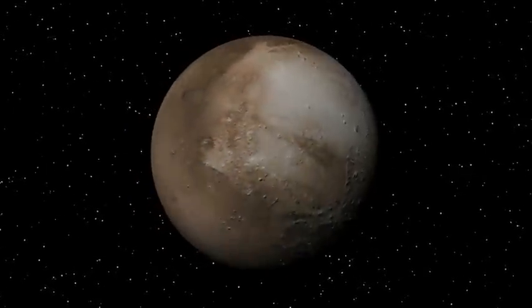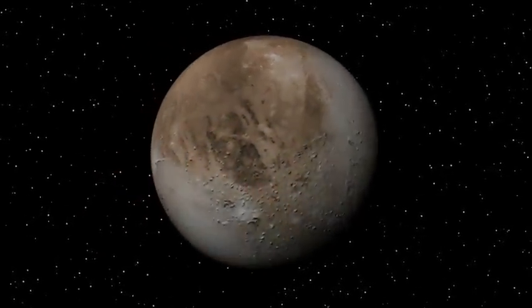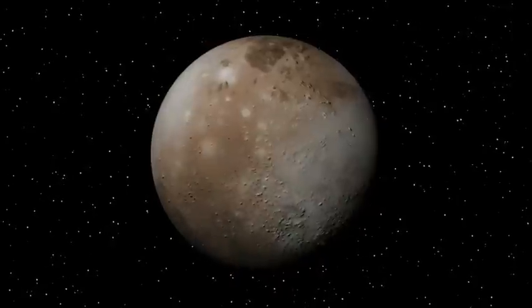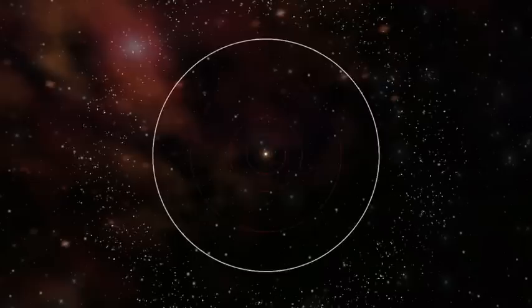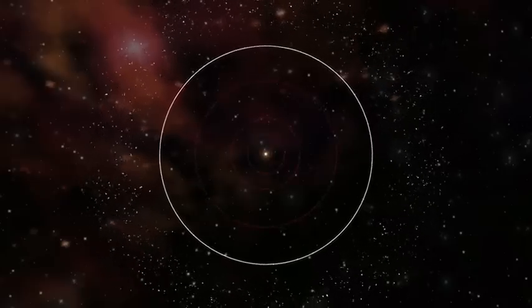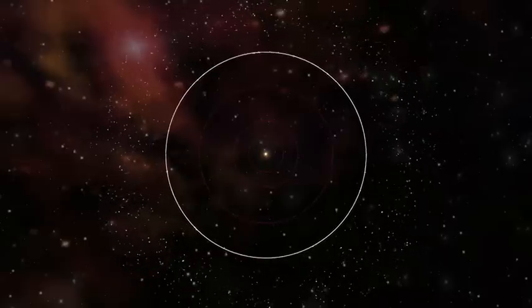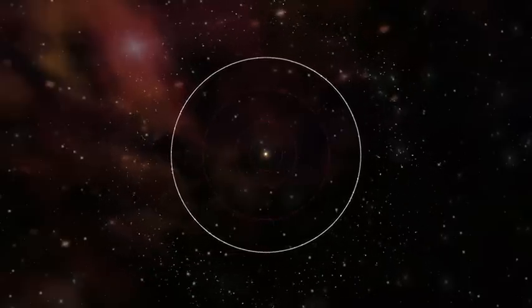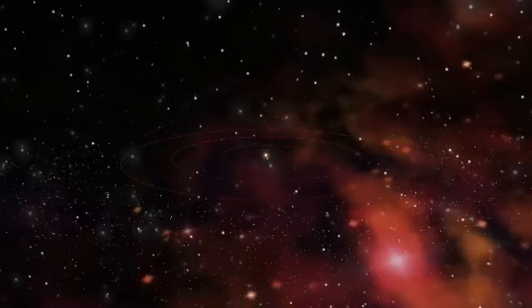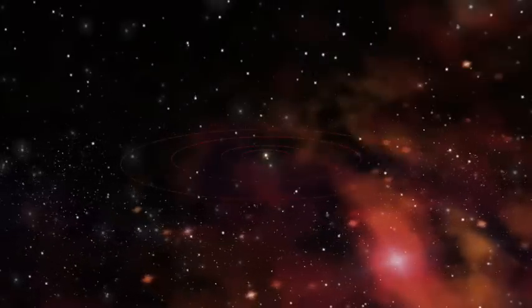Pluto is now deemed a dwarf planet and a member of the Kuiper Belt. The Kuiper Belt is a region of the solar system that extends just beyond the orbit of Neptune, at about 2.8 billion miles out to about 5 billion miles.